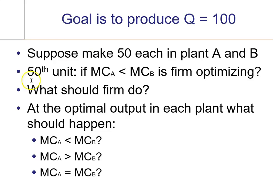Here's the scenario. You're trying to produce a hundred units of output between these two production facilities. And suppose initially that you allocate 50 to plant A and 50 being made in plant B.